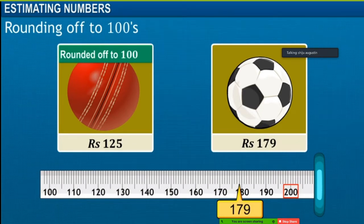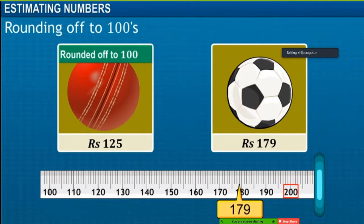While rounding off numbers to 100, numbers 1 to 49 are closer to 0 than to 100, so they are rounded off to 0. Numbers 51 to 99 are closer to 100 than to 0, so they are rounded off to 100. 50 is equidistant from both 0 and 100.